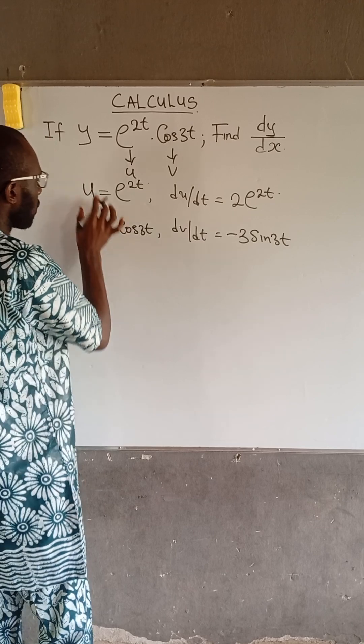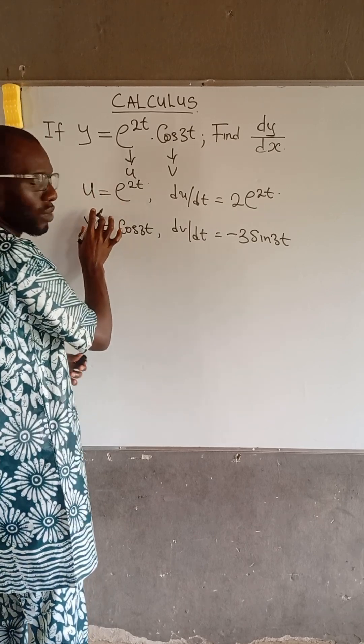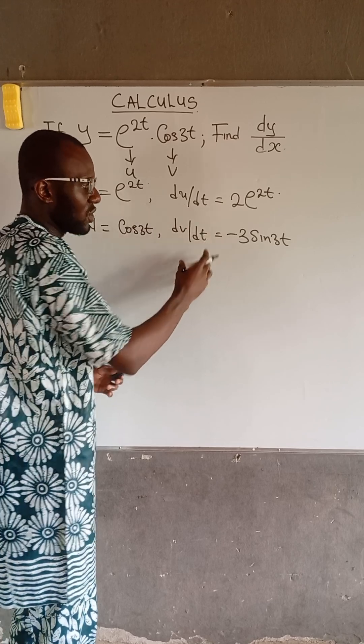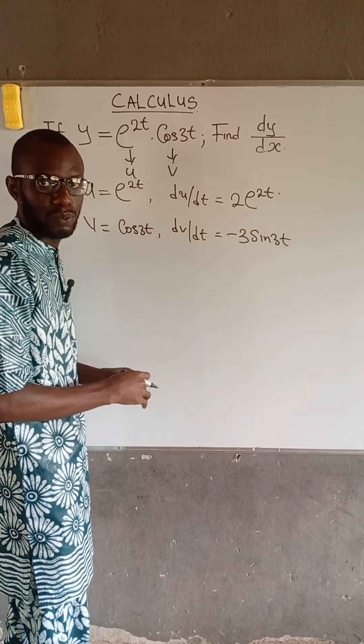At this point, we have the value of u, v, du over dt, and also dv over dt. So we can now use the product rule.